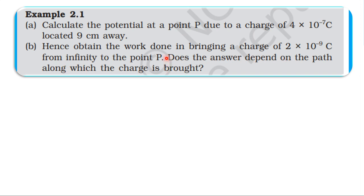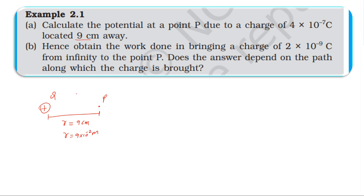The charge value is 4×10⁻⁷ coulomb. The charge is at a certain point, and the point P is at a distance of 9 centimeters away from the charge. So the distance r = 9 centimeters = 9×10⁻² meters, and the charge q = 4×10⁻⁷ coulomb.